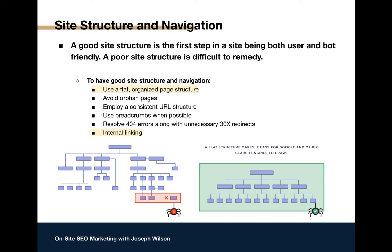Avoid orphan pages. All of your pages need to have internal links pointing to them. A good rule of thumb: ask yourself 'how would I get here if I can only click links?' If you can't answer that, it's an orphan page. Employ a consistent URL structure — URLs are informative to both users and bots.